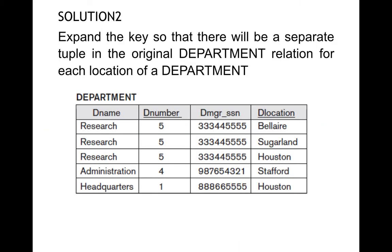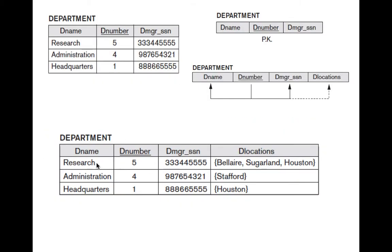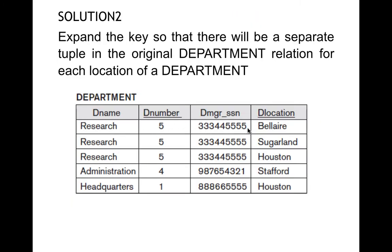The second solution is to expand the key so there will be a separate tuple in the original department relation for each location of the department. For research (department 5), instead of one row, we create three rows: research/5/manager_value/Belair, research/5/manager_value/Sugarland, research/5/manager_value/Hostet. We then modify the primary key to be D_number and D_location combined.